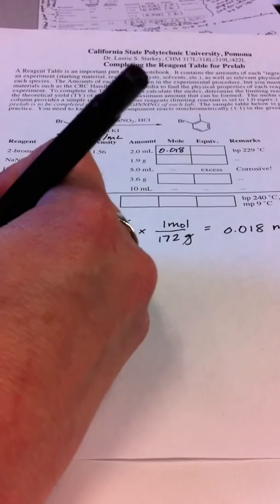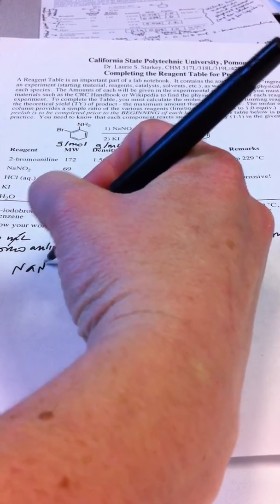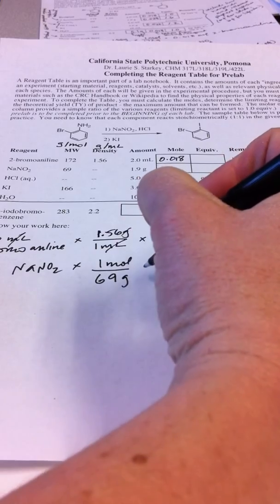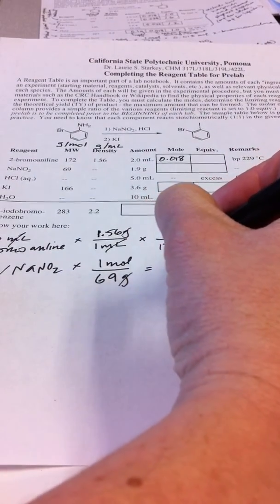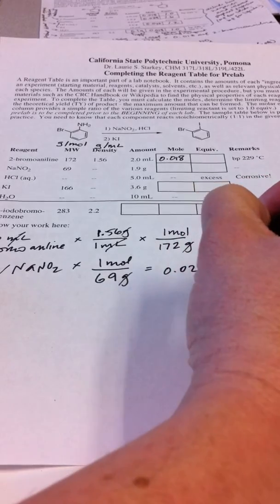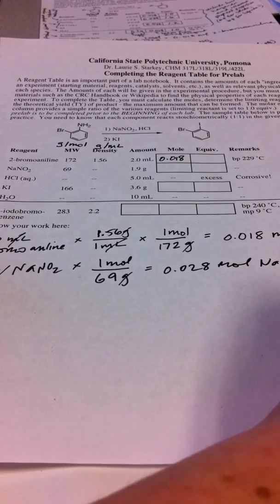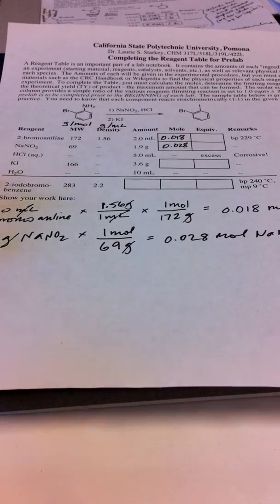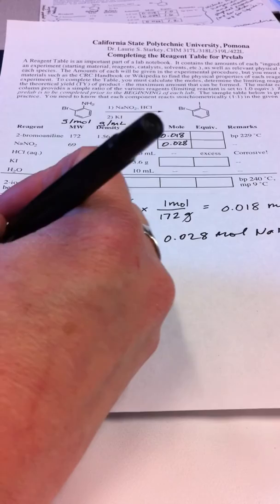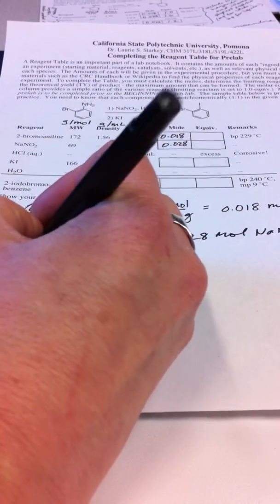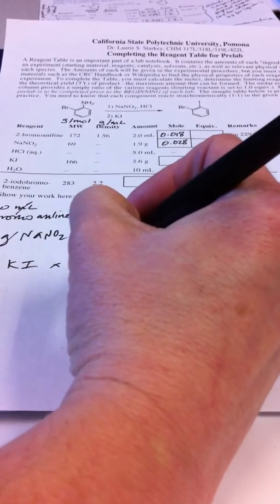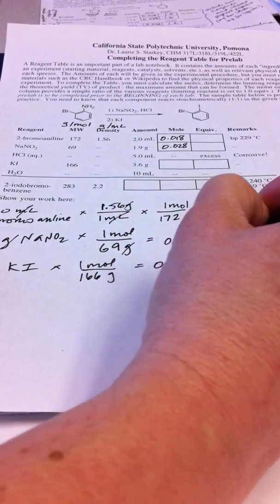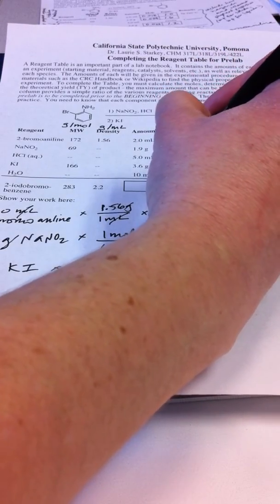We do the same for the NaNO2. We're starting with 1.9 grams of NaNO2 and we know that for every 1 mole there are 69 grams. So we're dividing by the molecular weight and we come up with 0.028 moles of NaNO2. We can put that on our table. We're going to calculate for each species how much we have. We have 3.6 grams of KI, potassium iodide, and for every 1 mole of that we have 166 grams. So that comes to 0.022 moles of KI. We're going to calculate the amount of each reagent that we have.